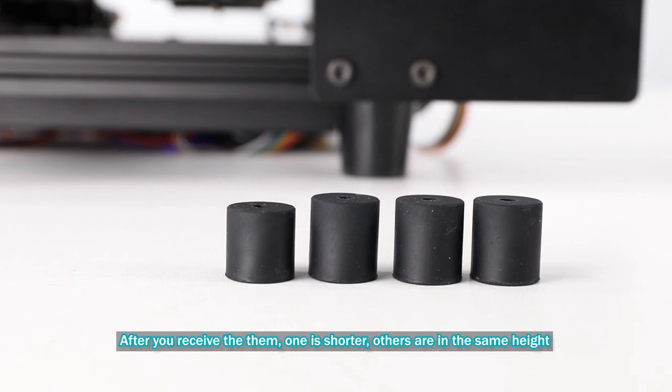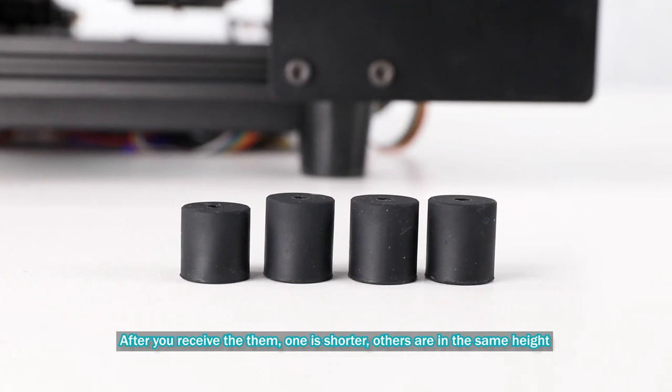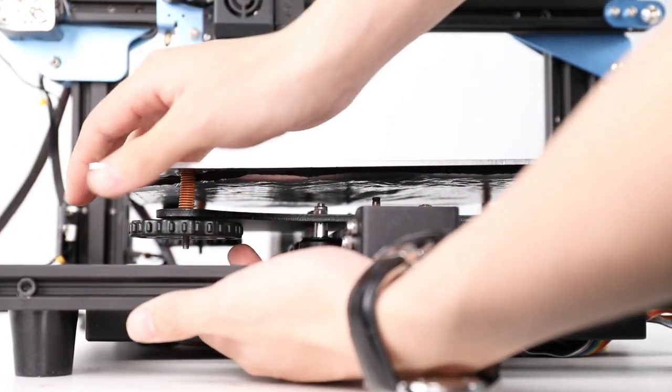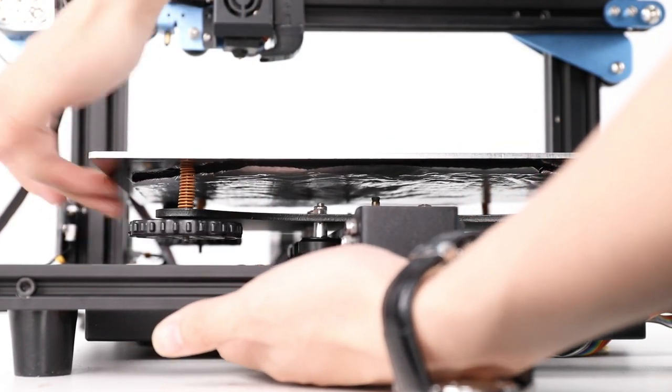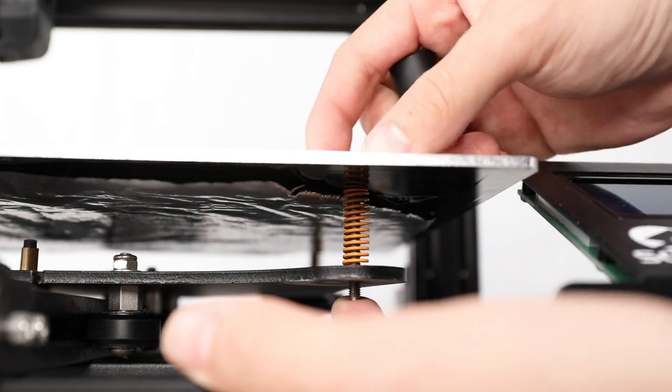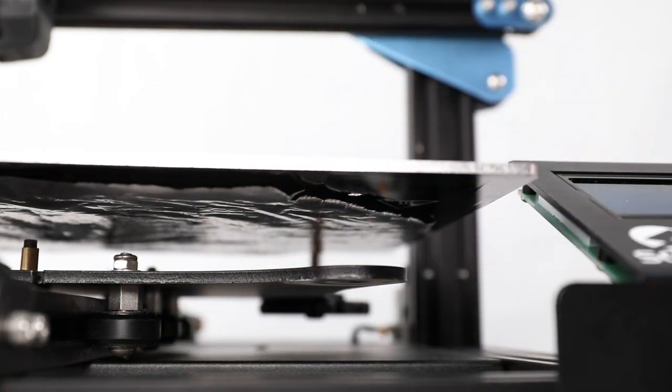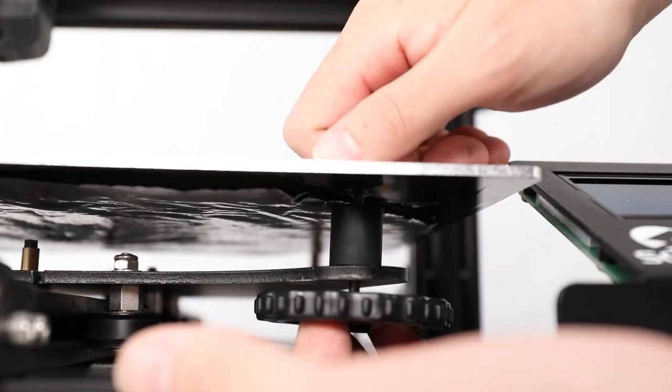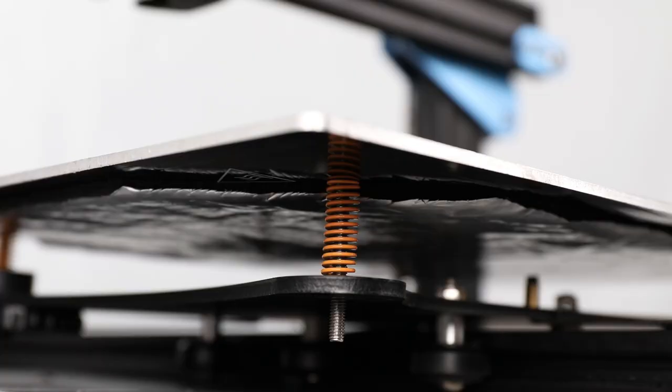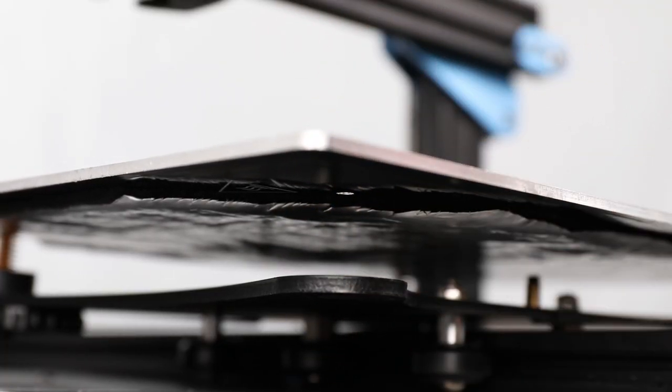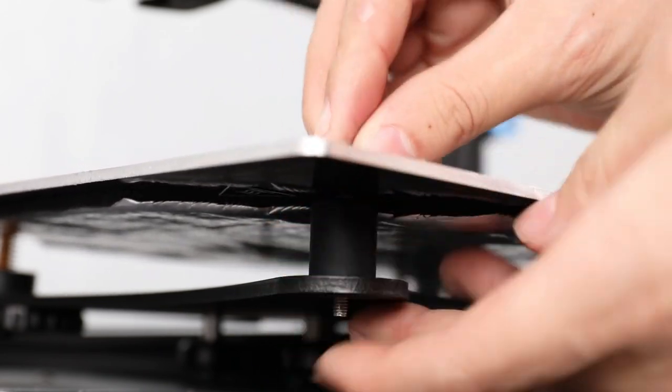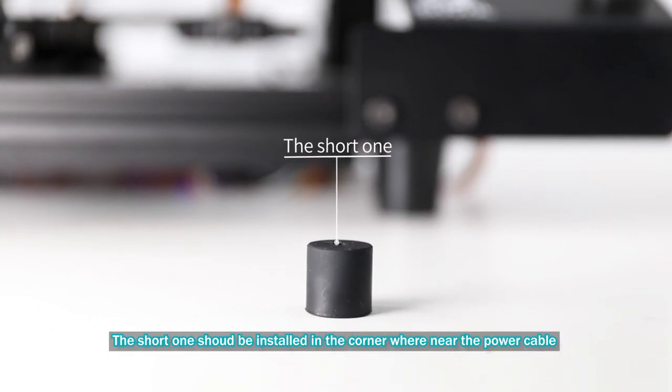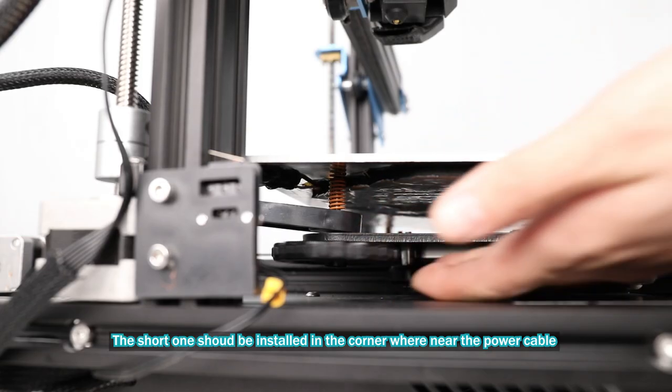After you receive the package, one is shorter, others are in the same height. The short one should be installed in the corner right near the power cable.